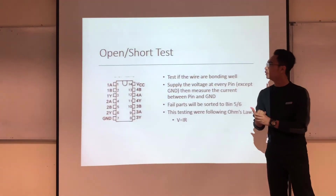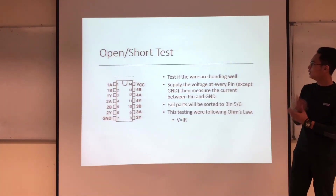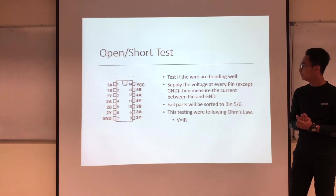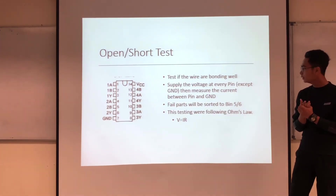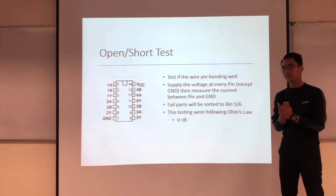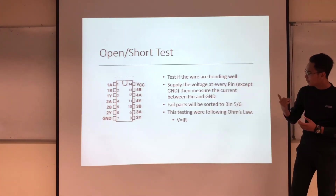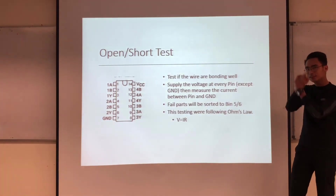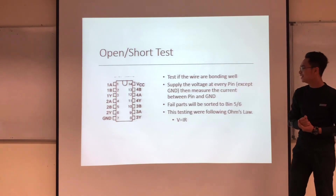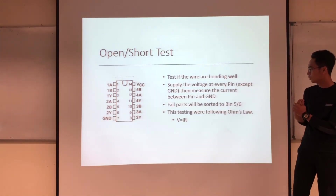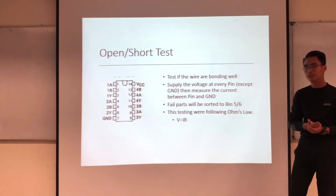For the open and short test, we test if the wires are holding well. We supply voltage at every pin and set ground, then measure the current between pin and ground. A fail condition will be a short to pins 5 and 6. This testing follows Ohm's Law: V equals IR.